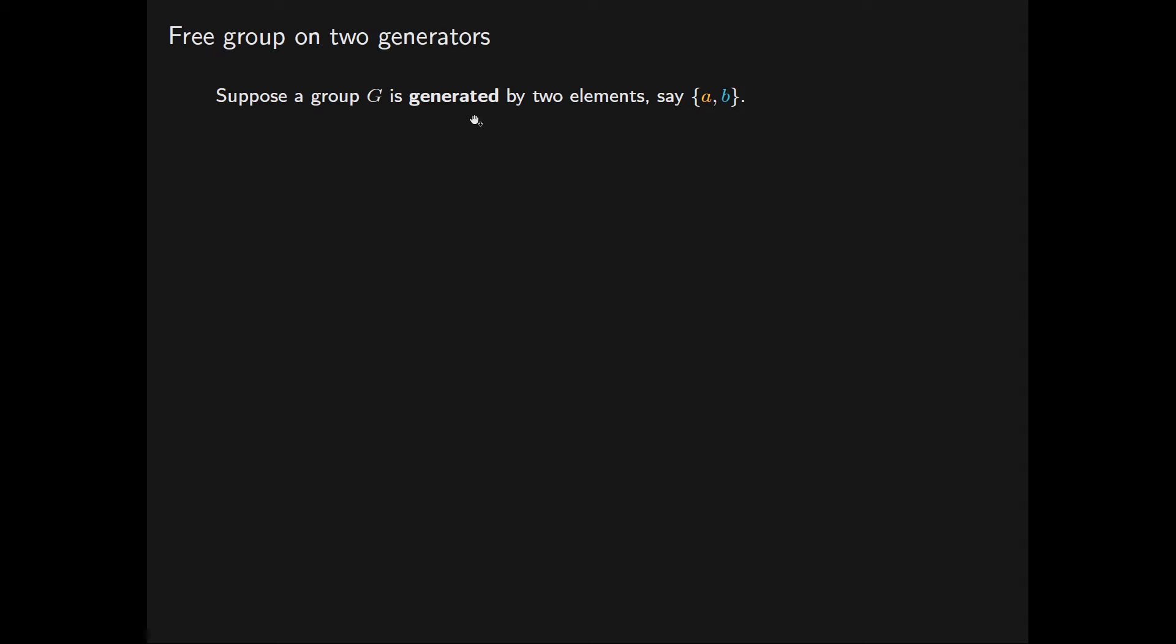Suppose that a group G is generated by two elements, say {a, b}. This means that every element of G may be expressed as a word in the elements a, a inverse, b, b inverse. For instance, ab gives us an element of G, as does a inverse ba, and b to the fourth b inverse ab.